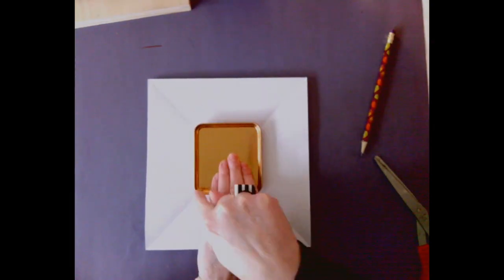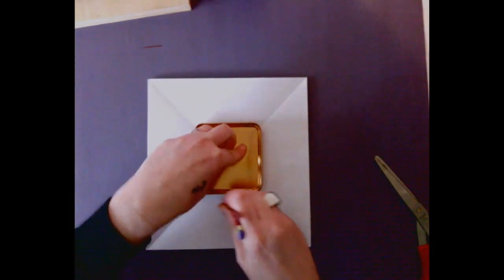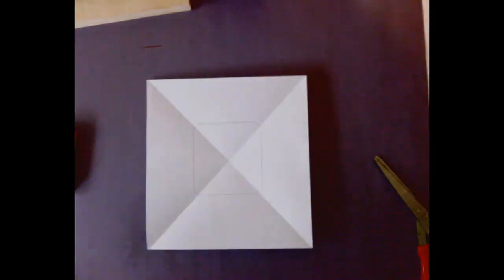Take either a circle or a square. If you're going to take a square, line up the corners on the lines and trace it.